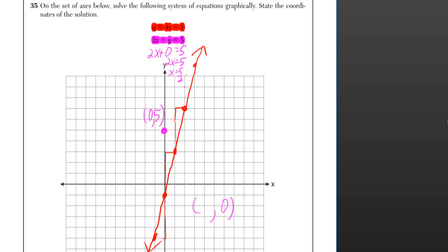So let's go over 1, 2 and a half. Ok, so that's 2.5 comma 0 right there. And then I can just connect those two points with a line.